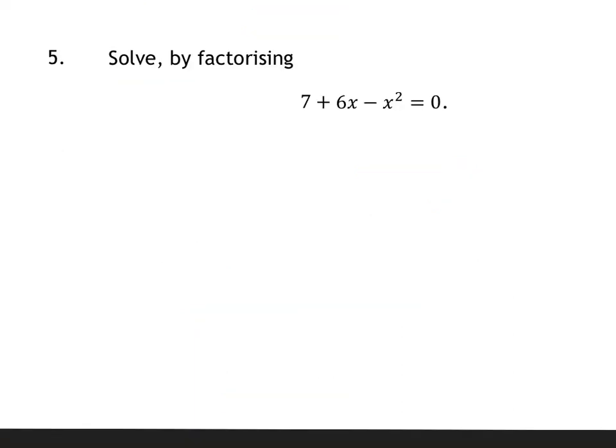Question 5 says solve by factorising. Now, I don't teach how to factorise negative x squared, but I do teach to take everything to the other side. So that would become positive x squared, that would become negative 6x, and that would become negative 7. And you could put the 0 on that side, but it's probably nicer to keep it on the side you're used to. So I've taken everything to the other side, so all the signs have changed.